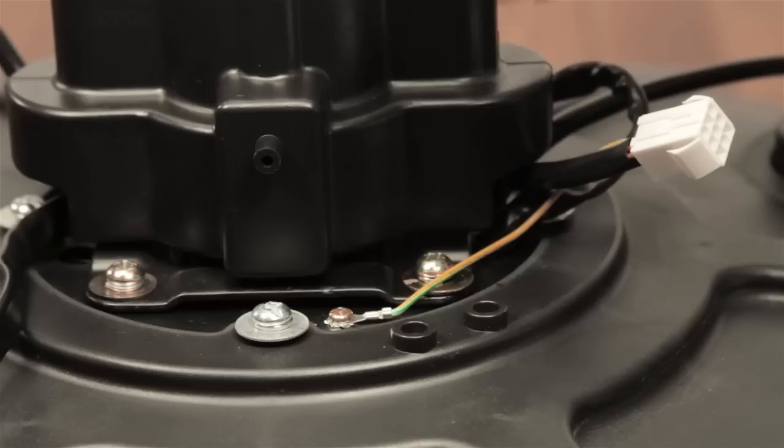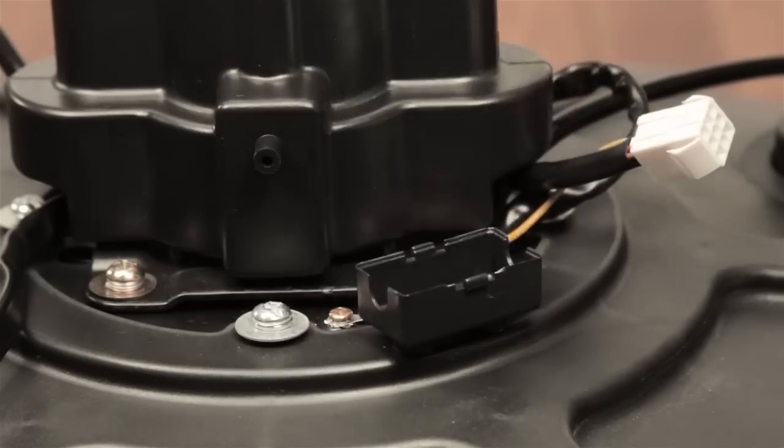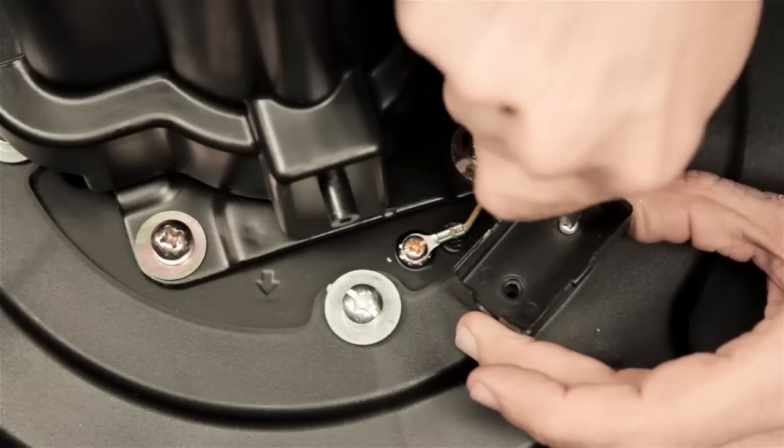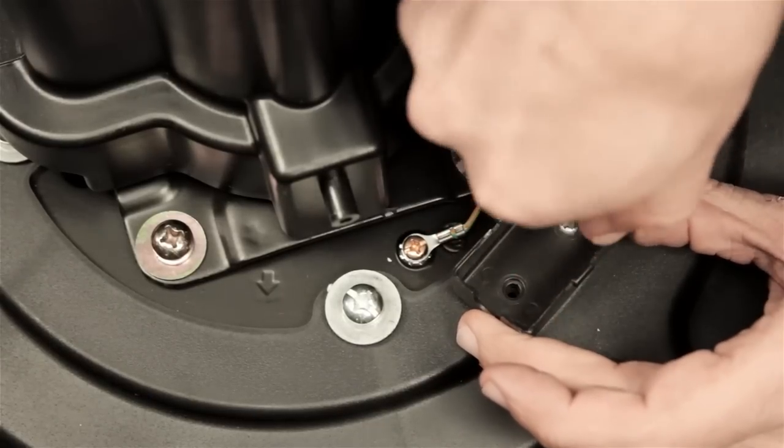Step 3. Fasten the electrical housing to the Brisa's power base assembly with the two screws provided in bag 2.